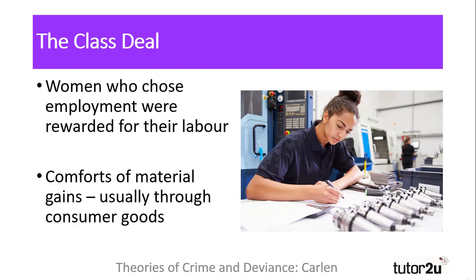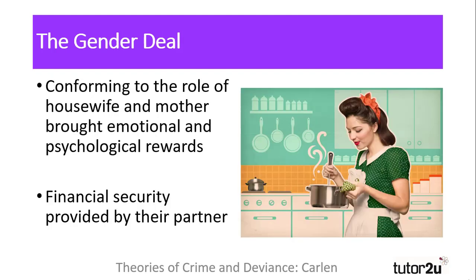This extended into education, with girls' ambitions of employment being used as a mechanism of control, where good behaviour and conformity would result in good grades. The second deal Carlin outlined was the gender deal — the acceptance of the traditional role of housewife and mother. Carlin suggested that women who chose this deal were rewarded emotionally through caring for their children, while they were supported financially by their partners, who provided security in exchange for the emotional, psychological and practical support that a wife would offer. Carlin was writing at a time of greater inequalities in domestic labour, with fewer dual-earner families, so women would often have either the gender deal or the class deal, rather than a combination of the two.